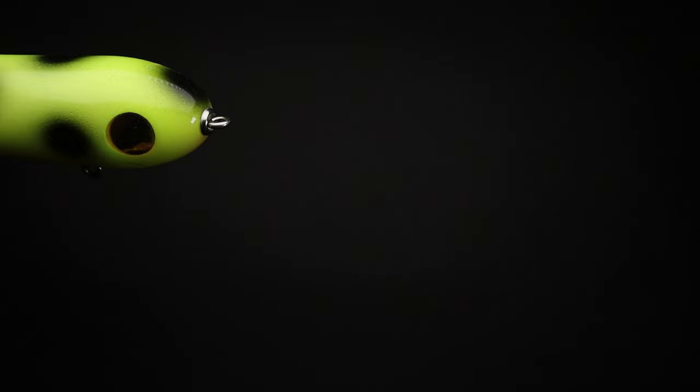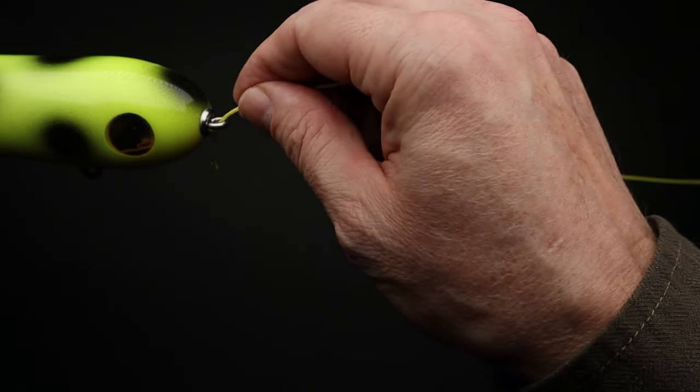Today we're going to learn how to tie a uni knot. The first step is to take the end of the line and run it through the eye of your hook or lure.